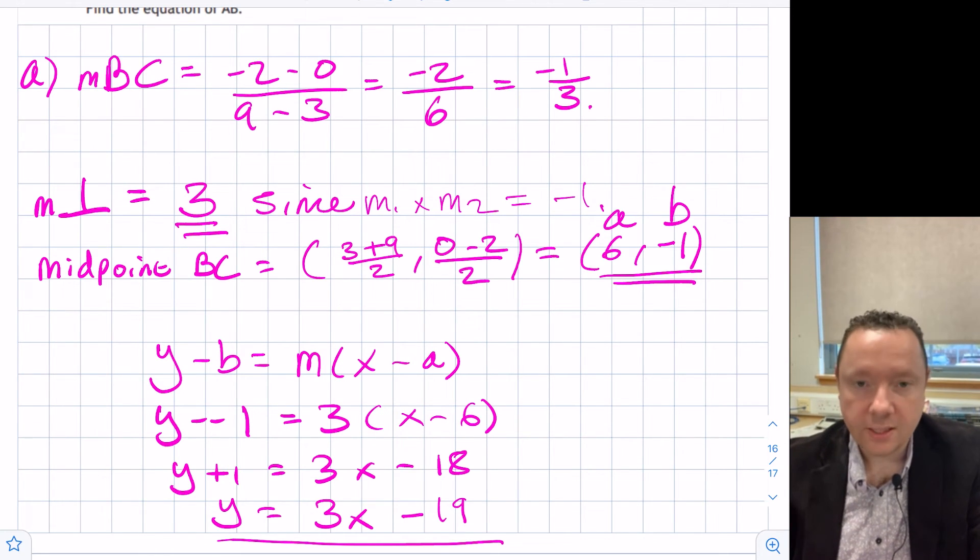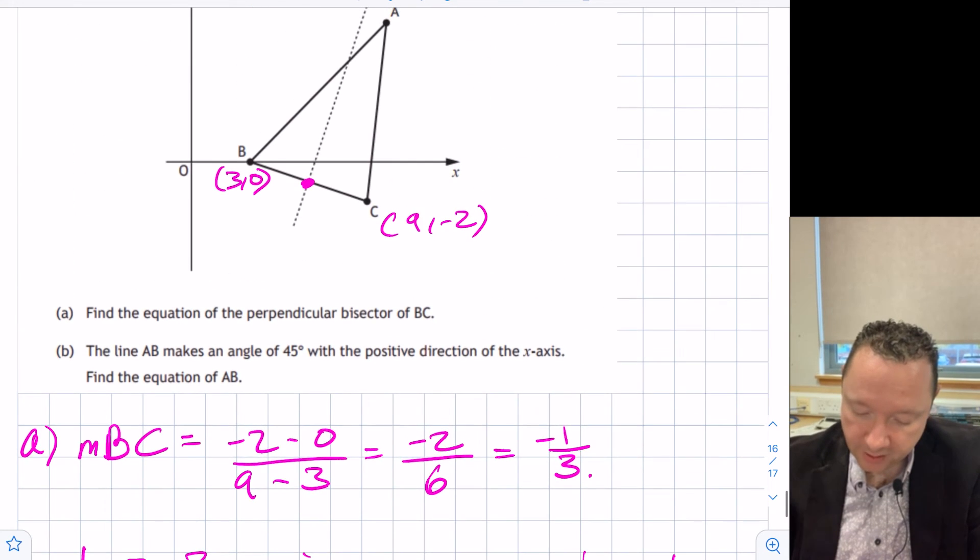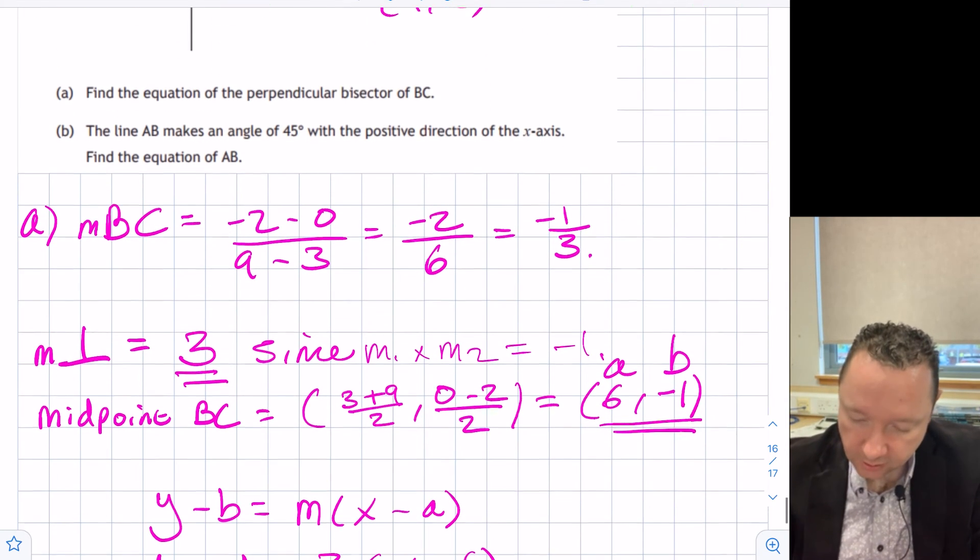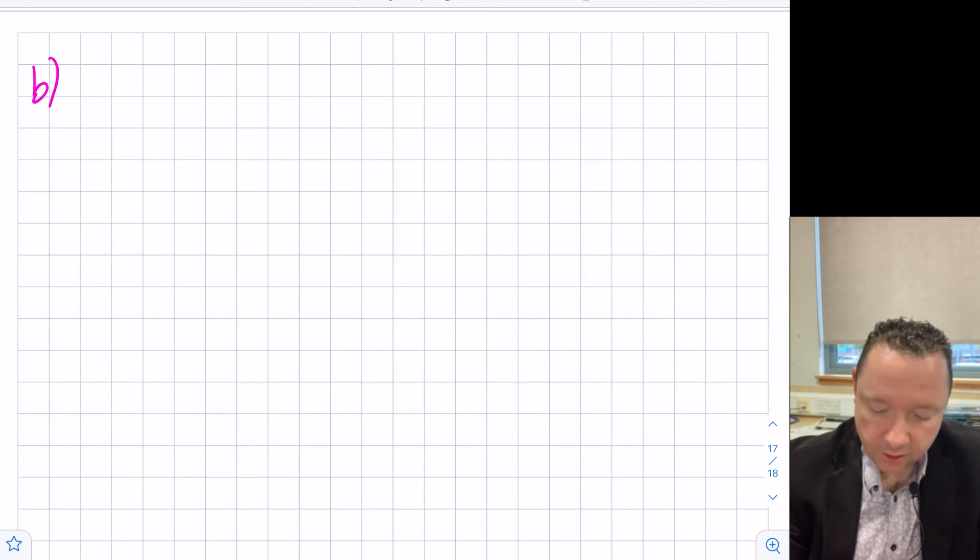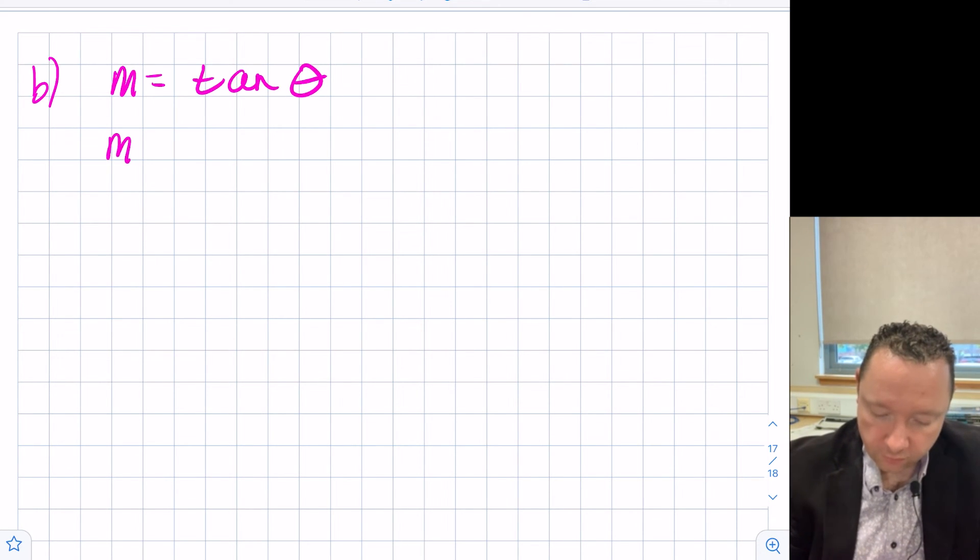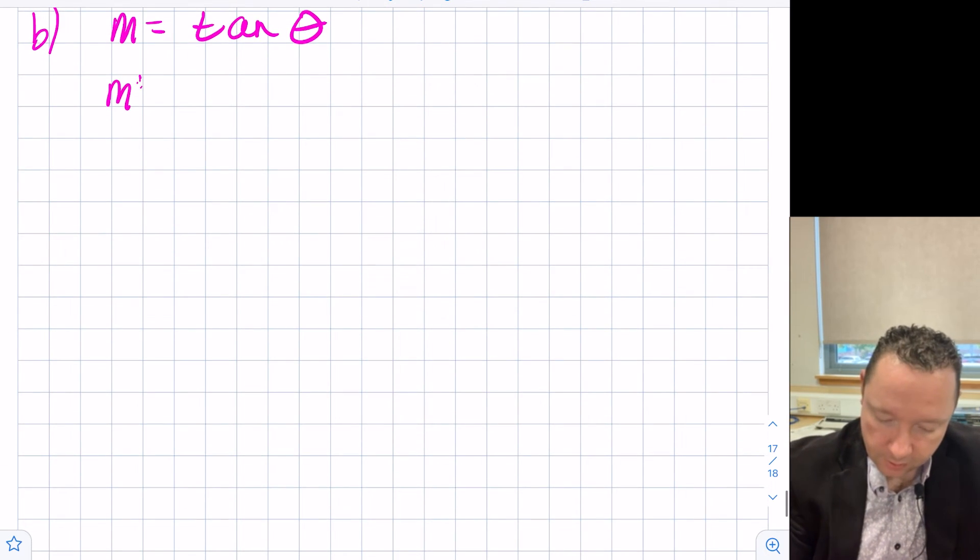That was part A of the question. Let's see what part B was asking for. It says the line AB makes an angle of 45 degrees with a positive direction of the x-axis. Find the equation of AB. We need to use the fact that the gradient equals the tan of the angle. So the gradient of the line AB equals the tan of 45 degrees.